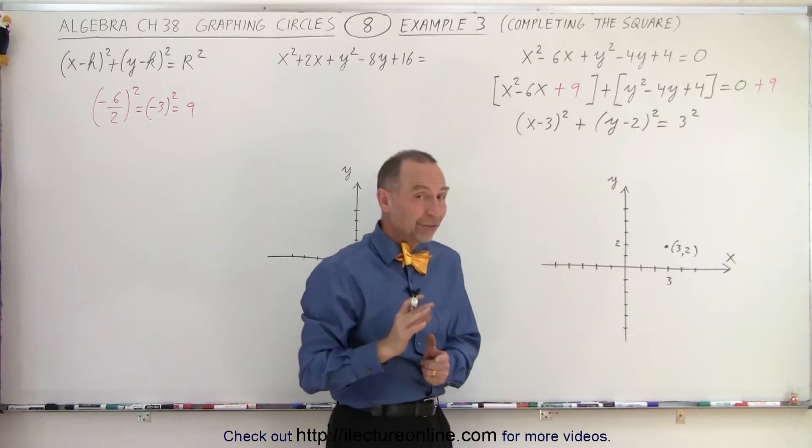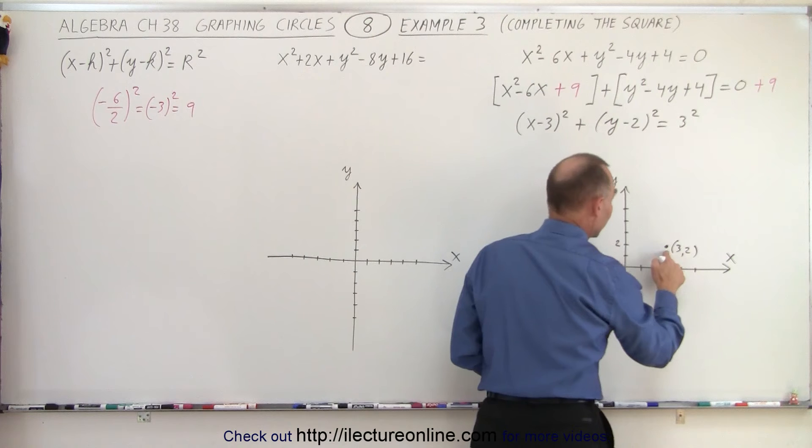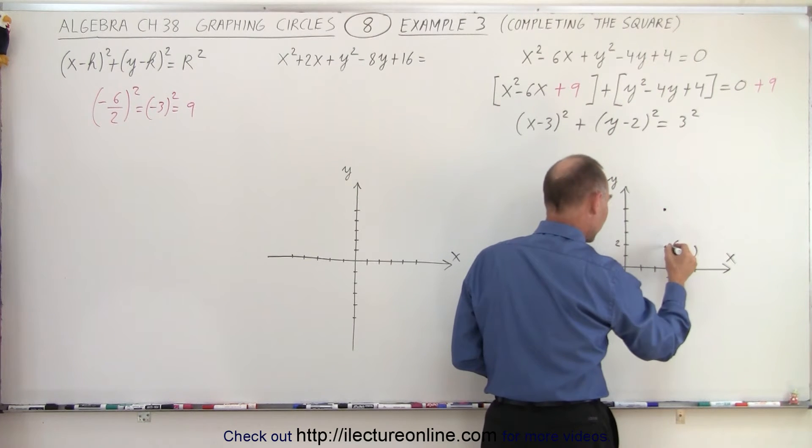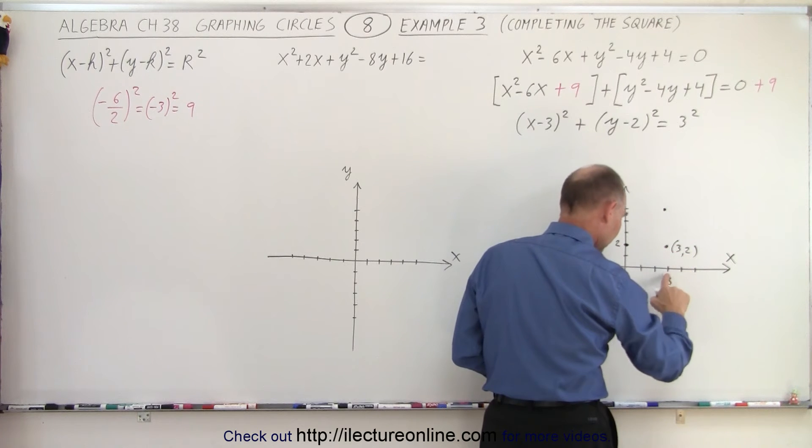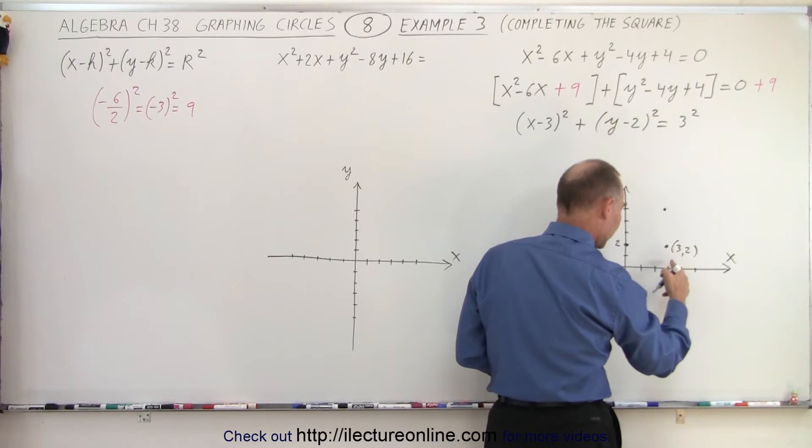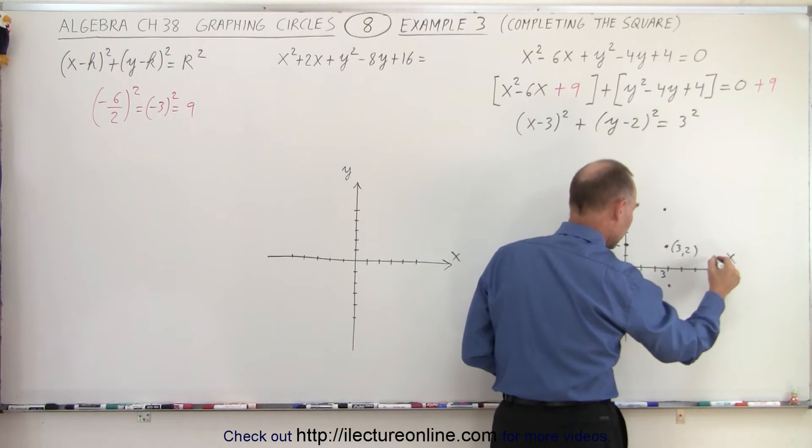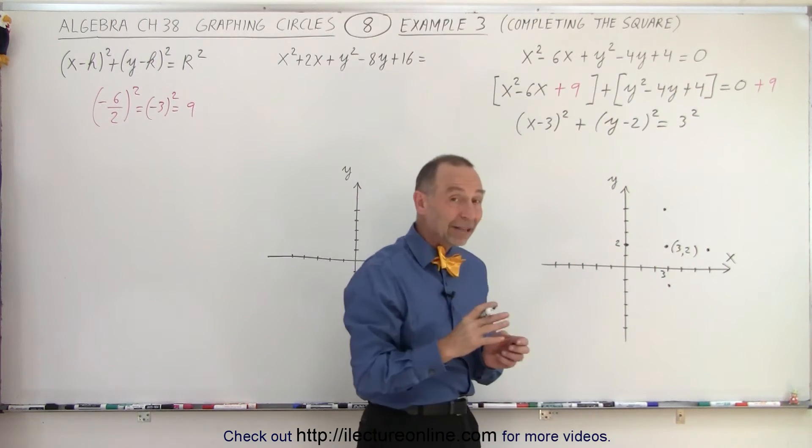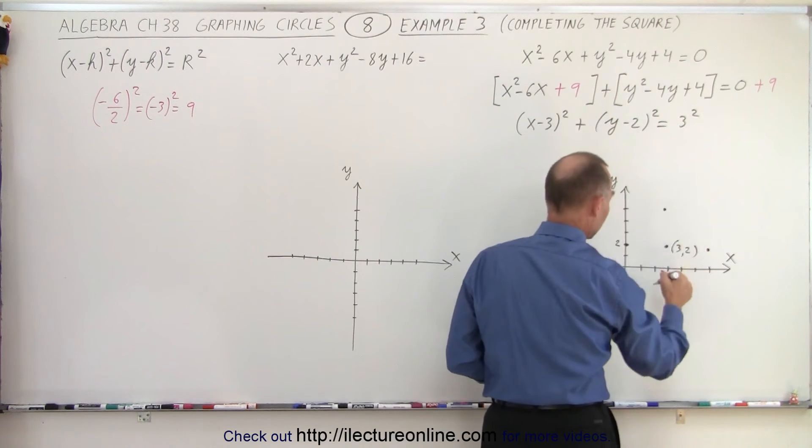Now, the radius is 3, which means from the center, we can go up 3, 1, 2, 3. We go to the left 3, 1, 2, 3. We go down 3, 1, 2, 3, right where I put my 3 there. Let me put it over there. And to the right 3, 1, 2, 3, over here. And those 4 dots lie on the edge of that circle. So, when we connect those 4 dots,